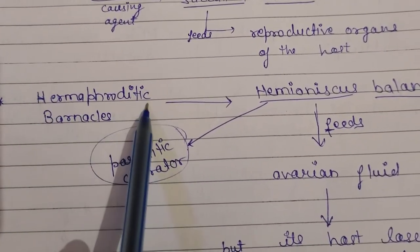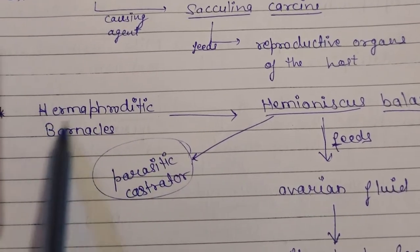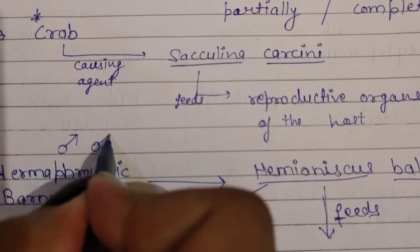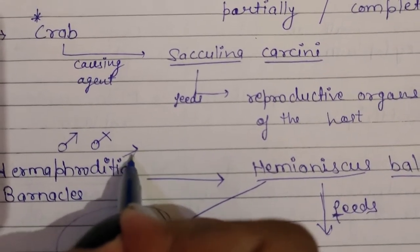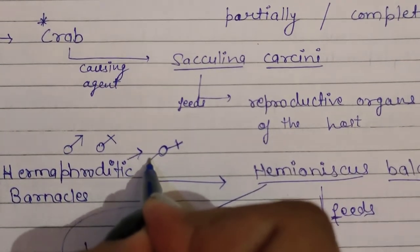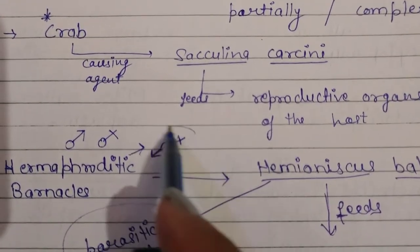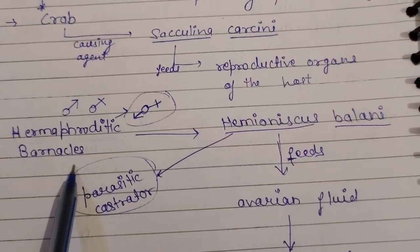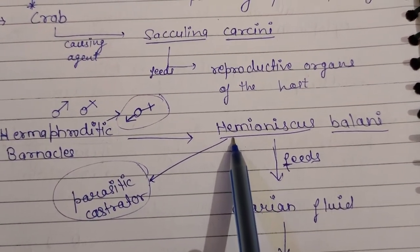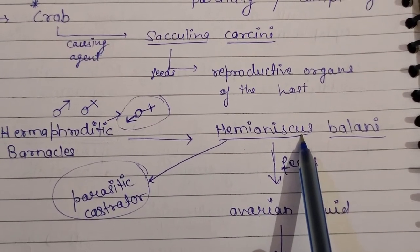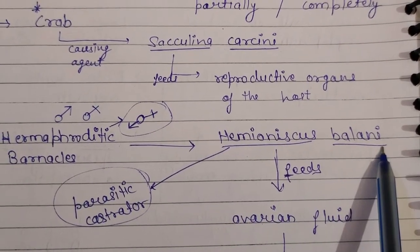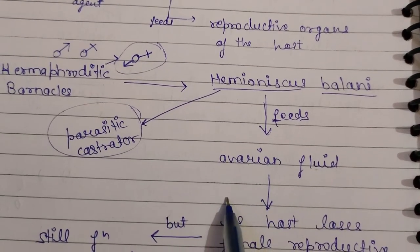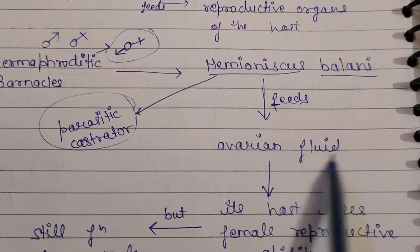The next example is hermaphroditic barnacles. Hermaphrodites are organisms that are bisexual — having both male and female characters present. In hermaphroditic barnacles, the causing agent of parasitic castration is Hemioniscus balani. Hemioniscus balani feeds on the ovarian fluid present in the barnacle.